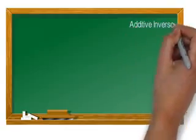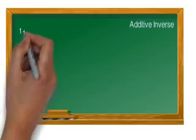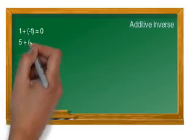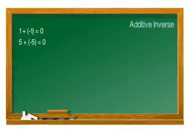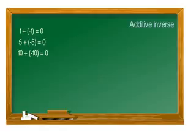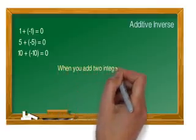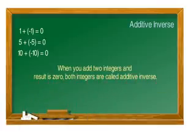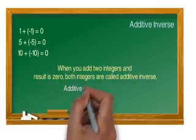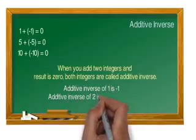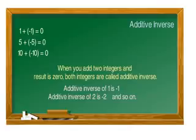Now let's see additive inverse. Observe these examples: 1 plus minus 1 equals 0; 5 plus minus 5 equals 0; and 10 plus minus 10 equals 0. So when you add two integers and the result is 0, both integers are called additive inverses. Additive inverse of 1 is minus 1, and additive inverse of 2 is minus 2, and so on.